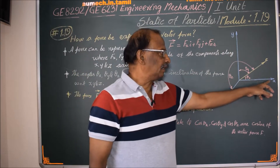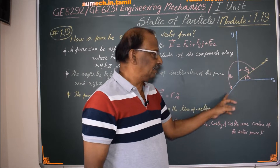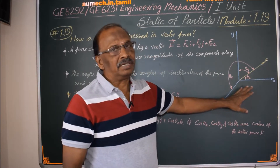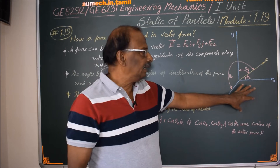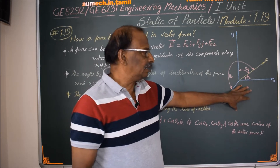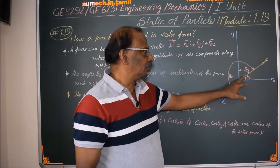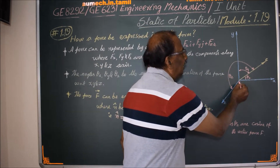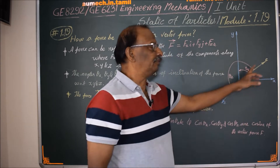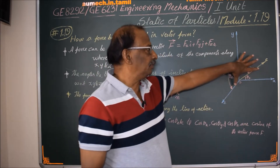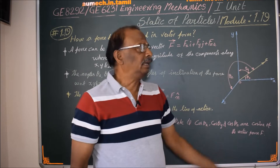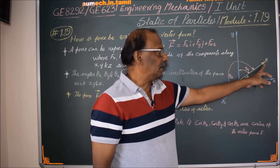This is the x, y, z — the 3-dimensional coordinate system. This coordinate system will represent the force. This is the origin O, and F is the force vector. This magnitude is F, and the force arrow head points in this direction.